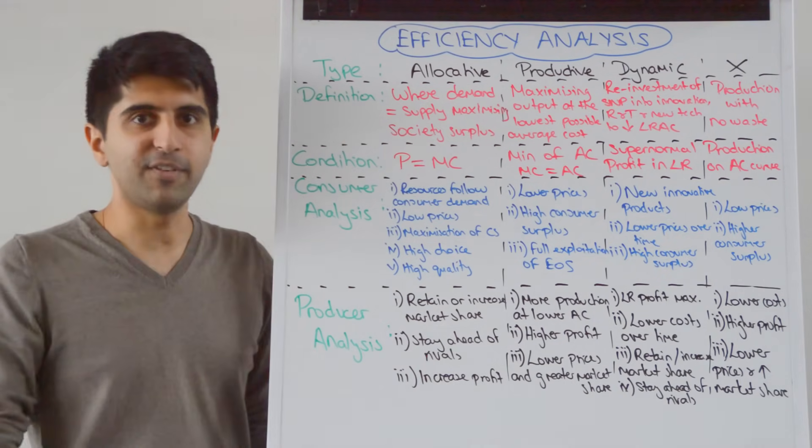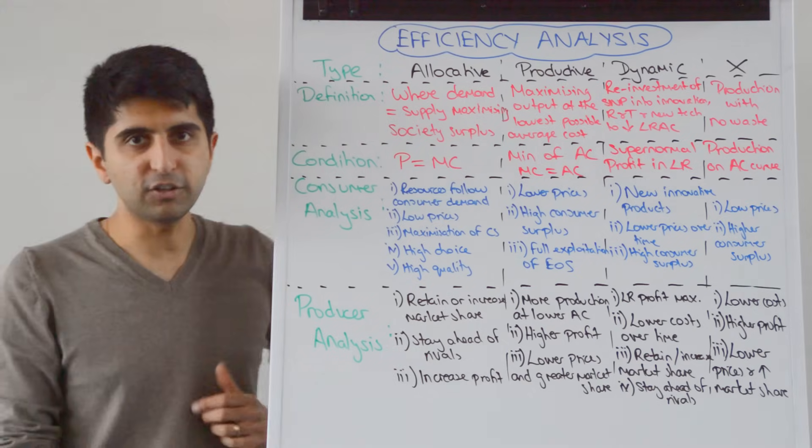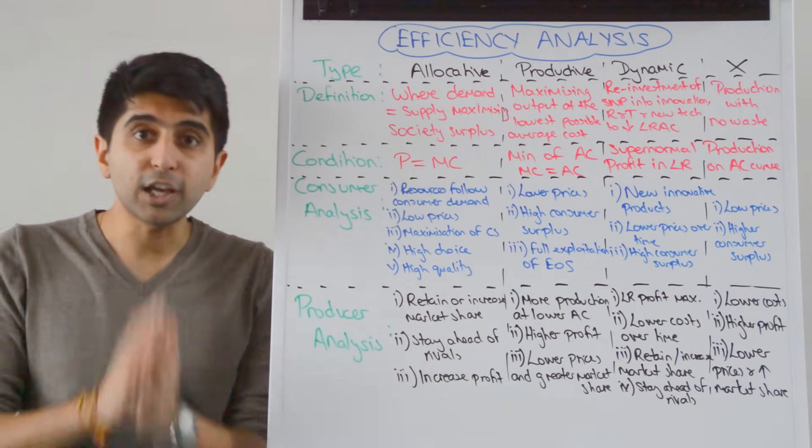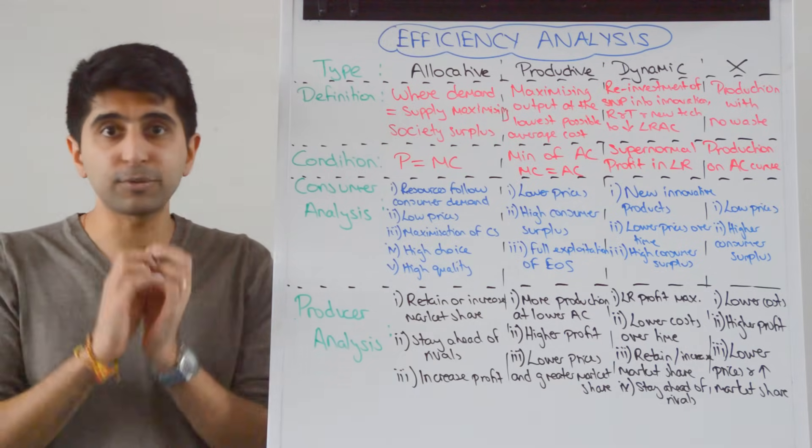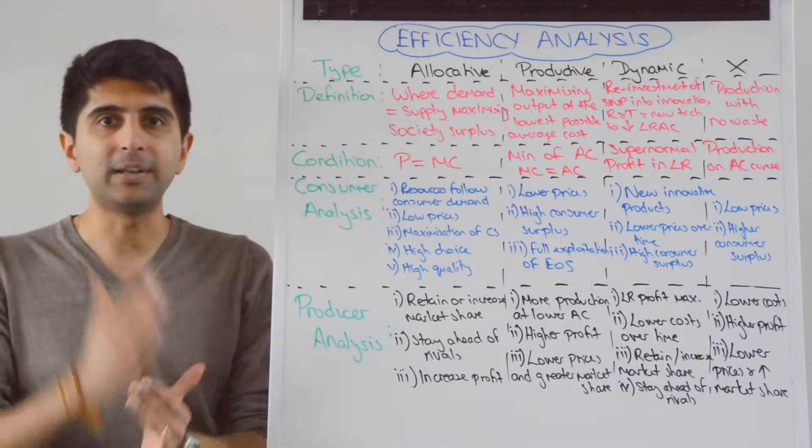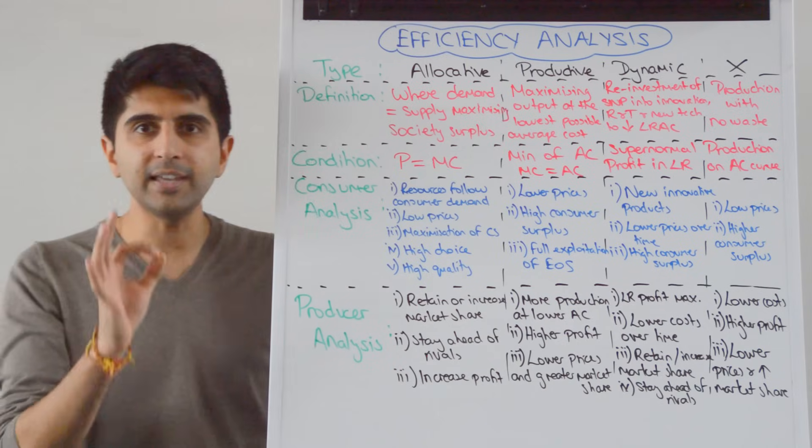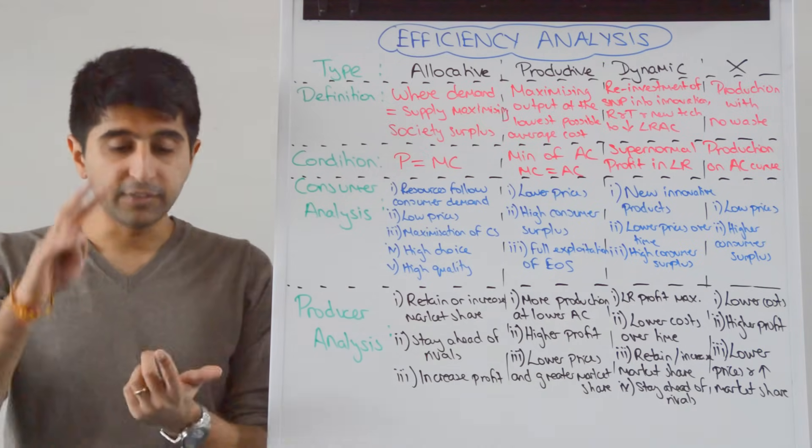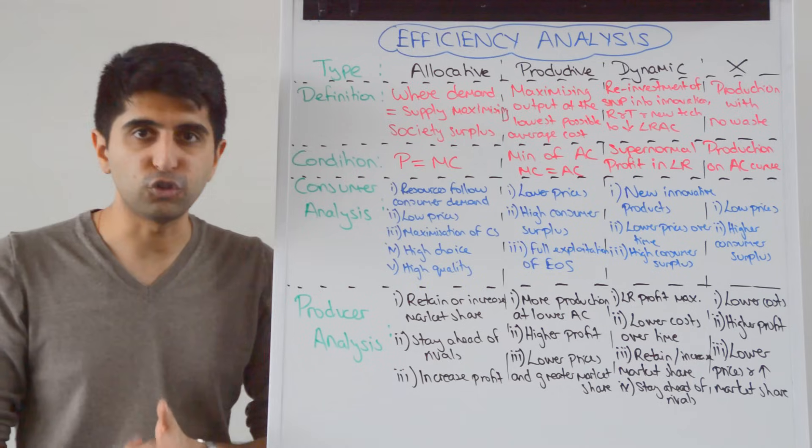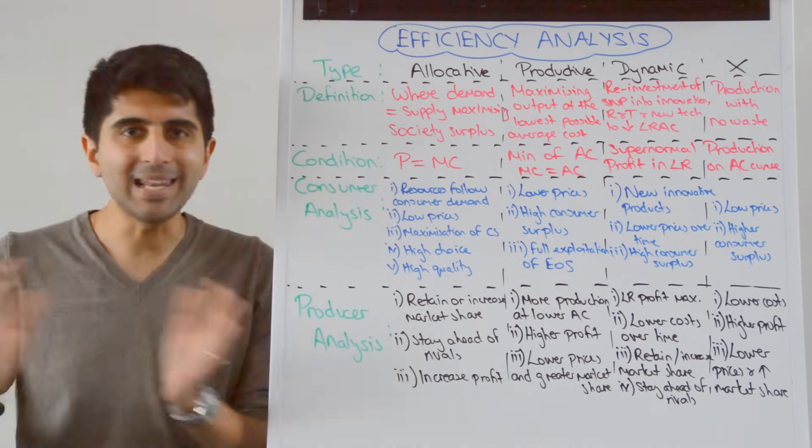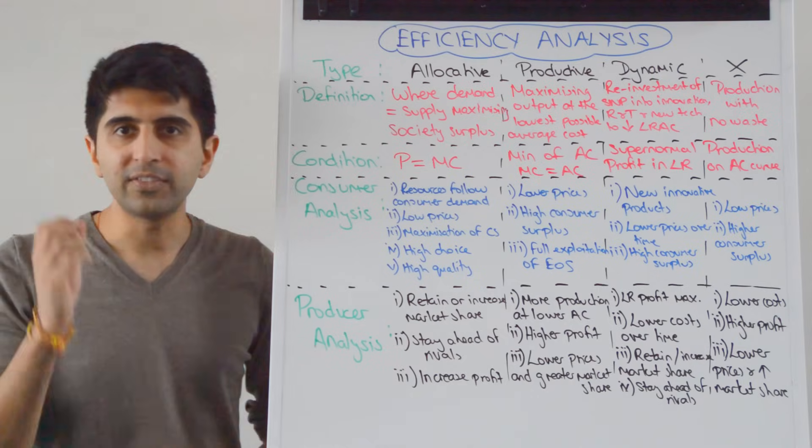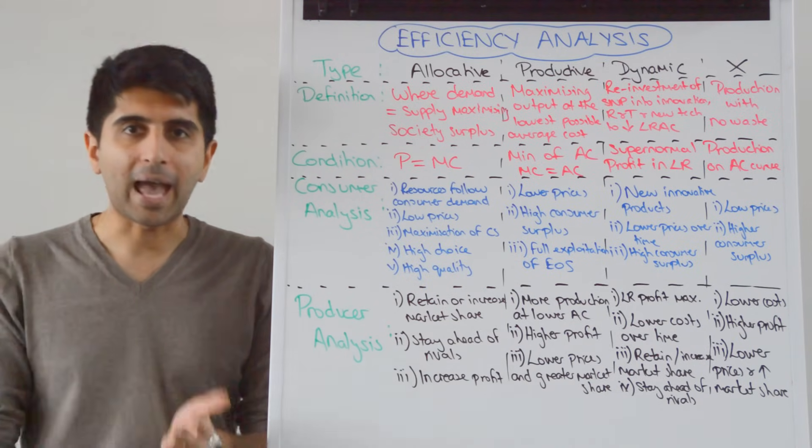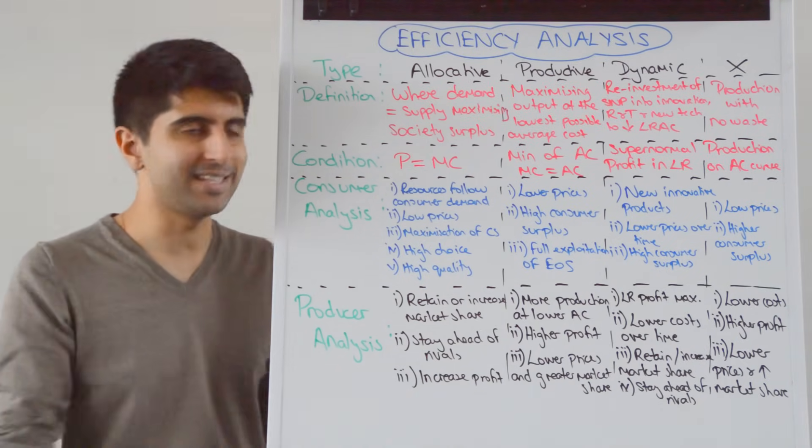Let's look at allocative efficiency first. What is the definition of allocative efficiency? It occurs where demand equals supply in a market, and that is absolutely true for a business as well. At that point society's surplus is being maximized - the sum of producer and consumer surplus. We can't do any better than that in economics when it comes to allocating scarce resources than maximizing both consumer and producer surplus. That is allocative efficiency.